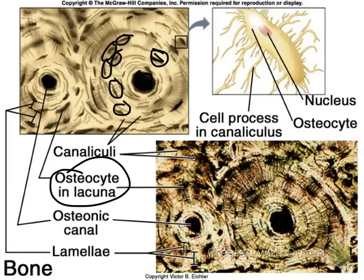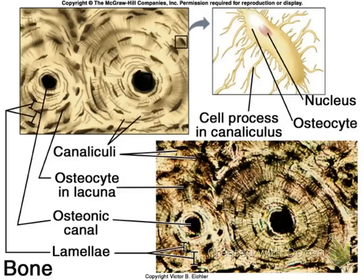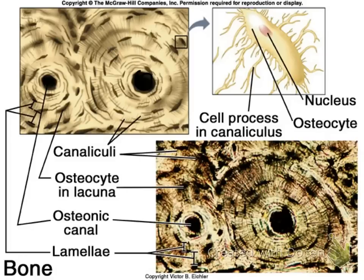Running from those lacunae or the osteocytes are tiny little channels — these little cracks or lines are called canaliculi, which literally means tiny canals. You cannot really see the collagen fibers, but all of that cream-colored background is your ground substance.